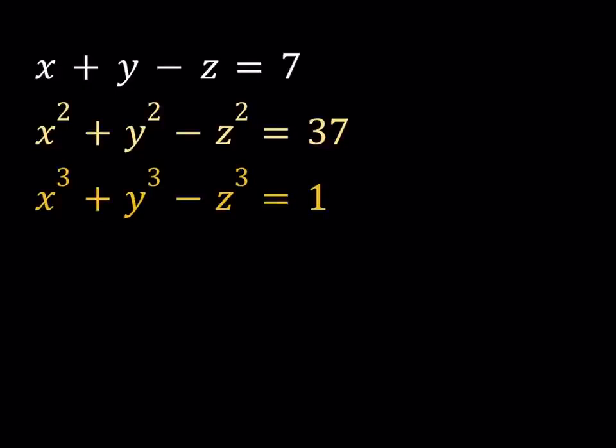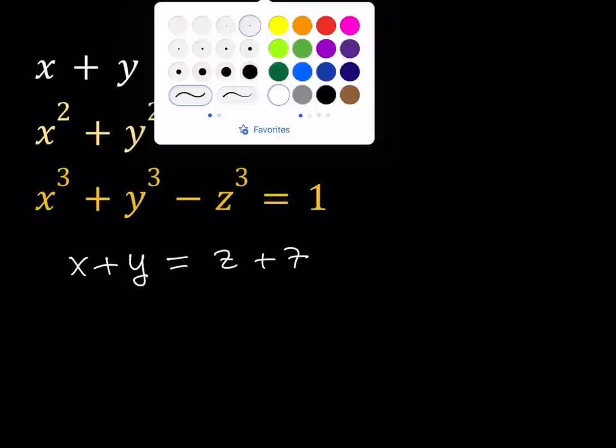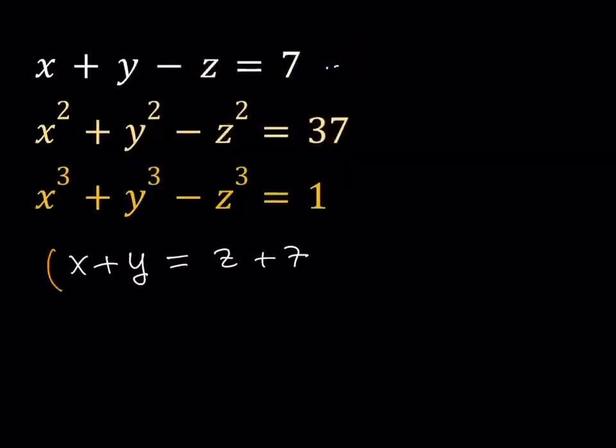First of all, notice that we have the first powers, second powers, and the third powers. I'm going to start with the first equation, and then I'll isolate the x plus y. So, let's start by writing x plus y is equal to z plus 7. And then, since I want to use the other equations, starting with the second one, I will square both sides.